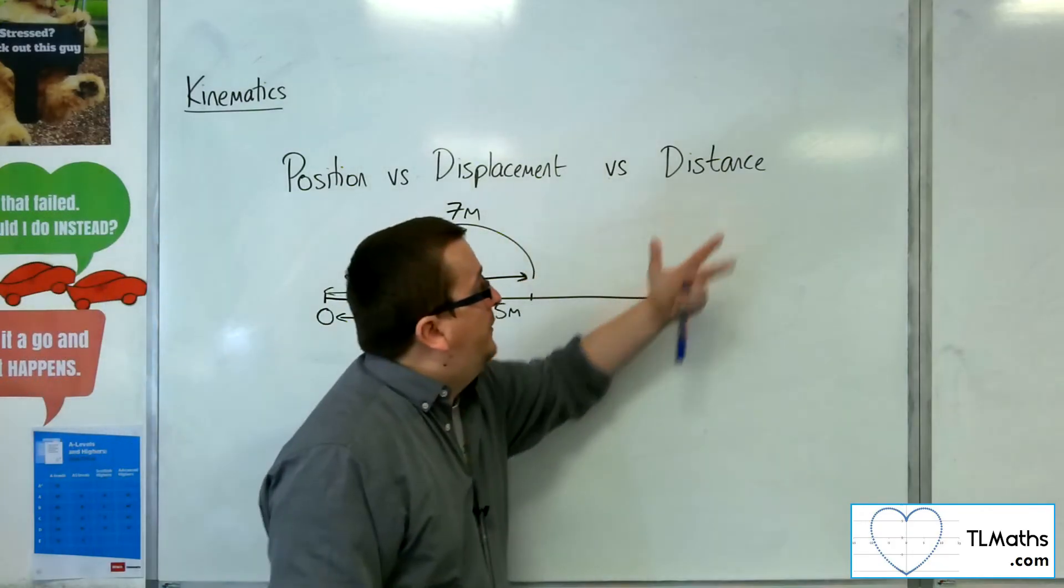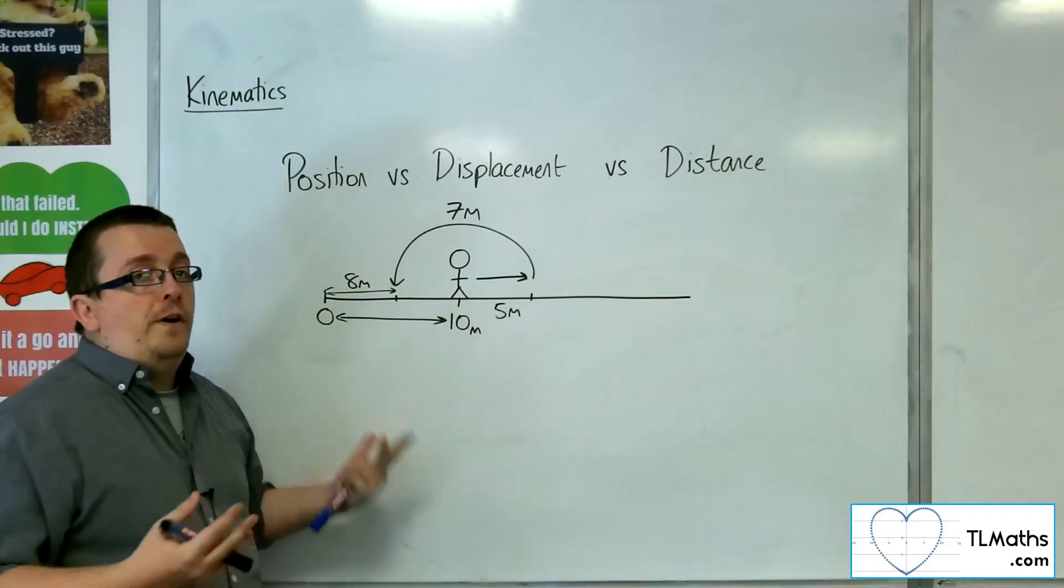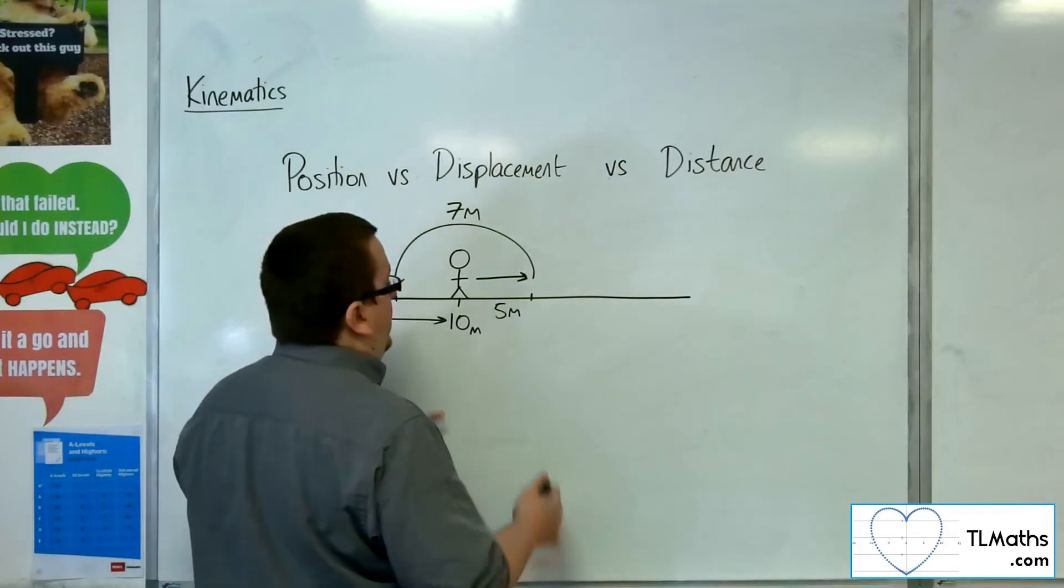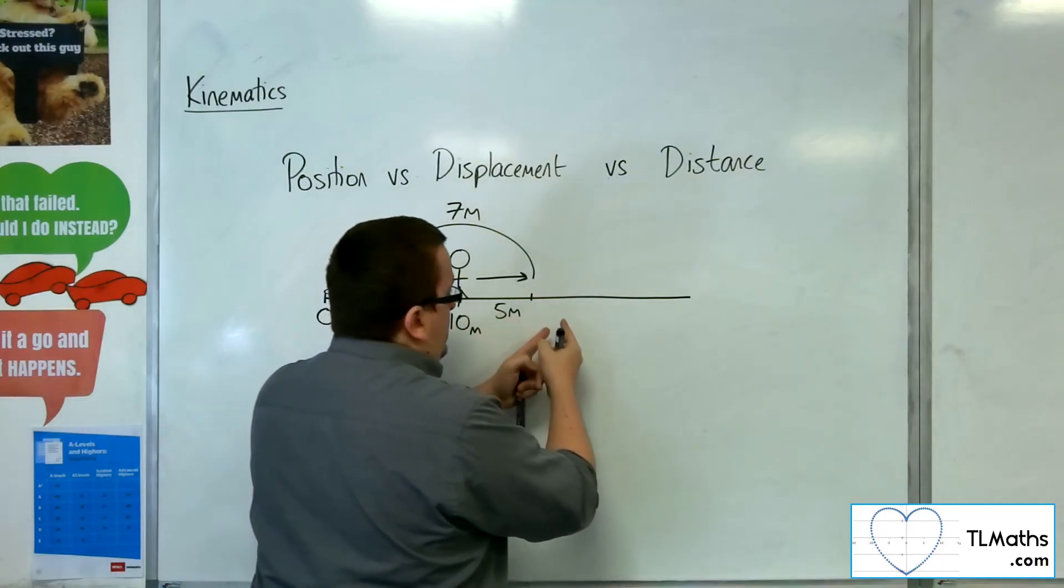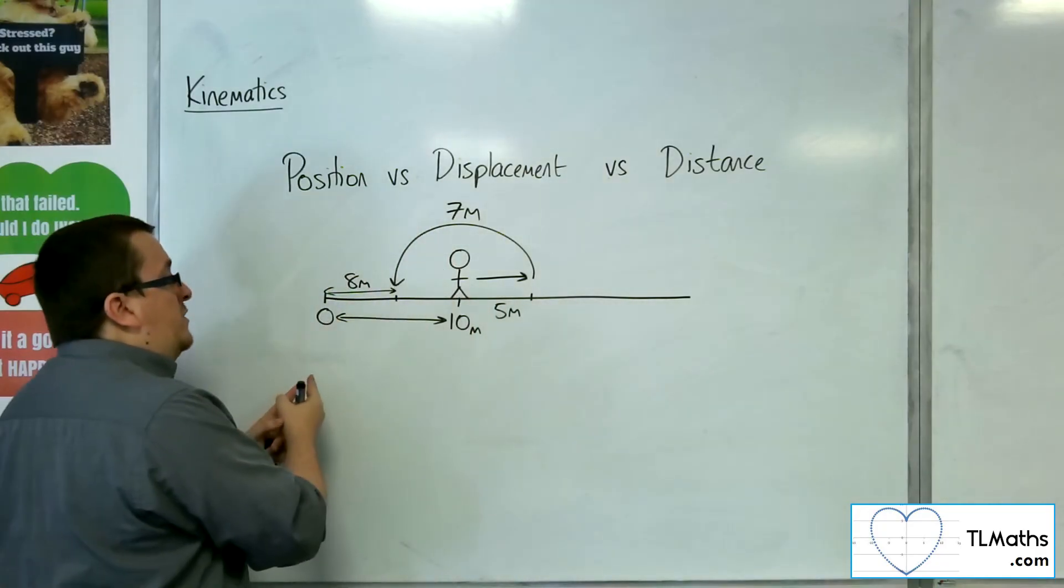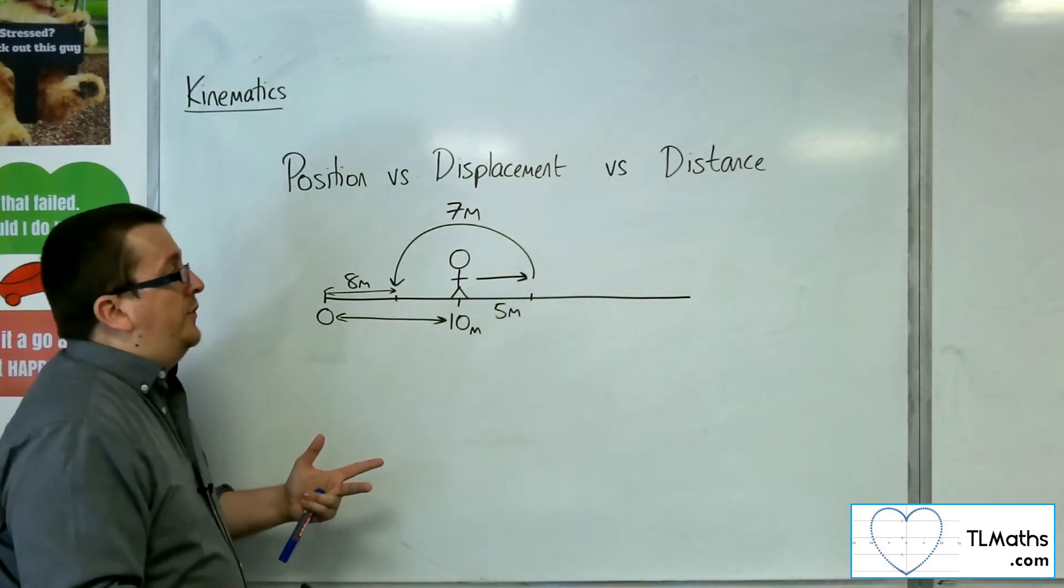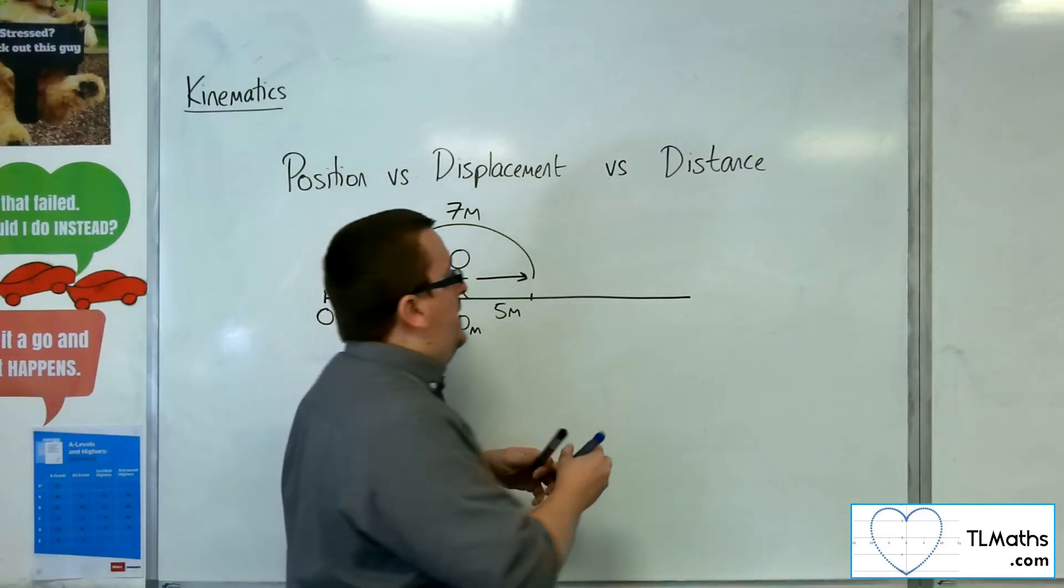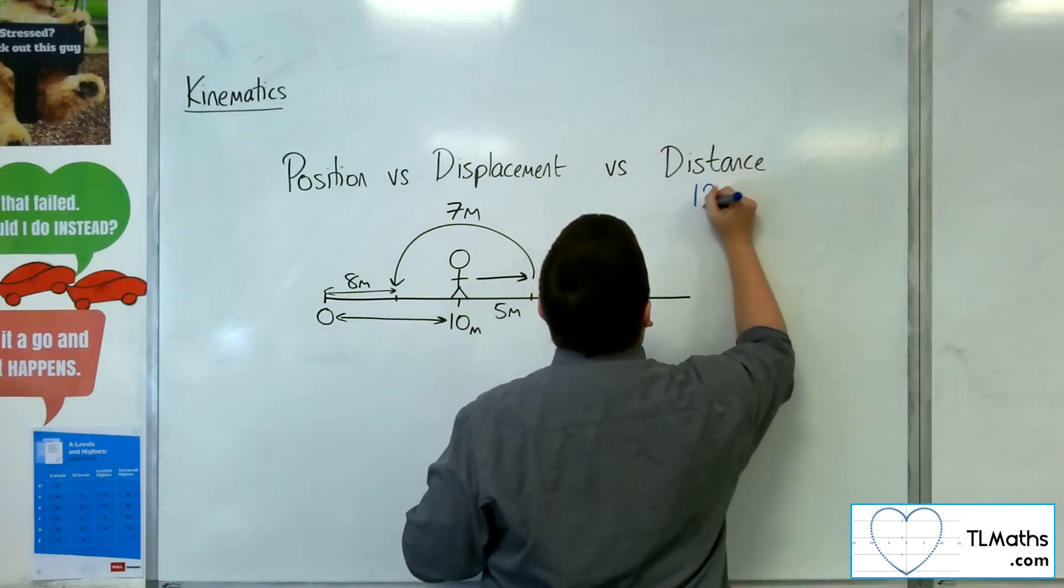Now, the distance talks about how far they've actually travelled. So, the distance is that this person has walked 5 metres this way and then 7 metres this way. So, their distance is actually 12 metres. They've covered 12 metres in that effort.